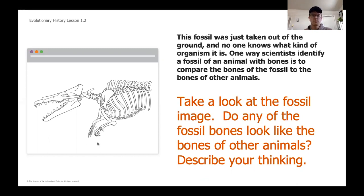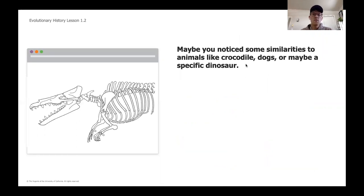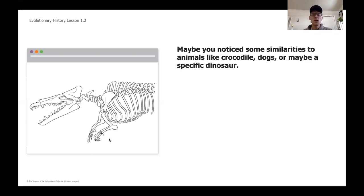If you thought of maybe a crocodile, or a dog — maybe you thought this leg looked a little bit like your dog's leg — or you thought of a dinosaur, those are not necessarily all the answers. You could have come up with a lot of different things. Remember, as long as you were describing what you saw, that's the main point. We want to start making connections between this fossil and animals we're already familiar with.